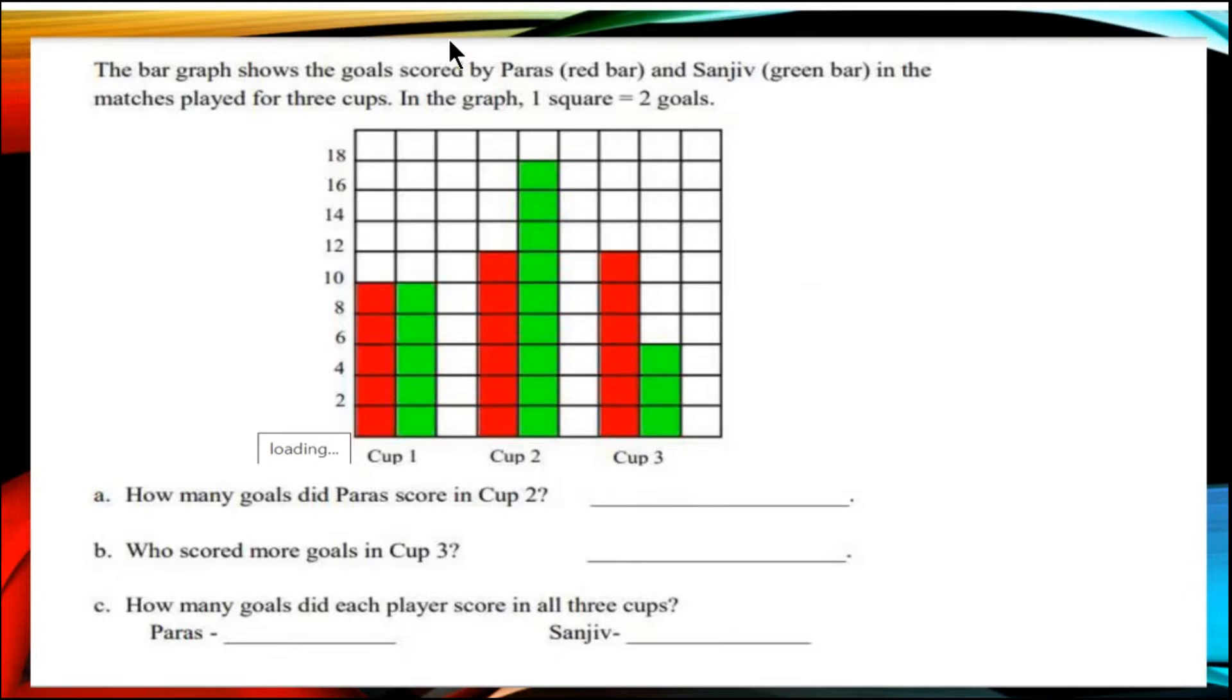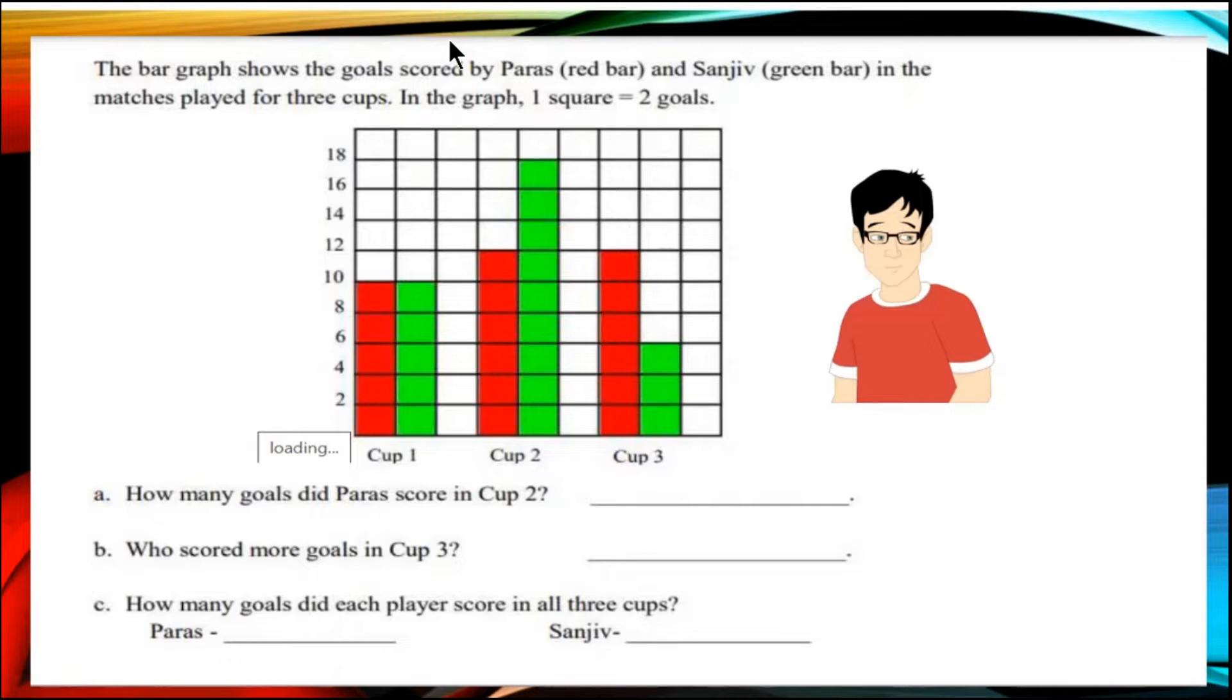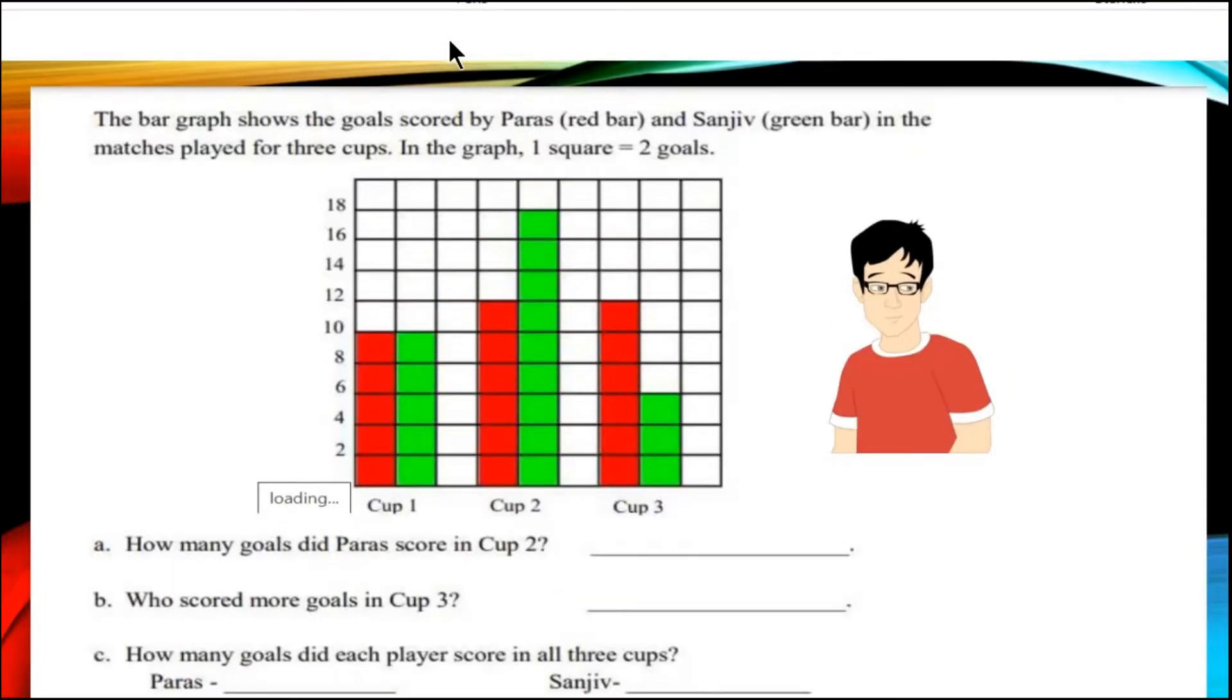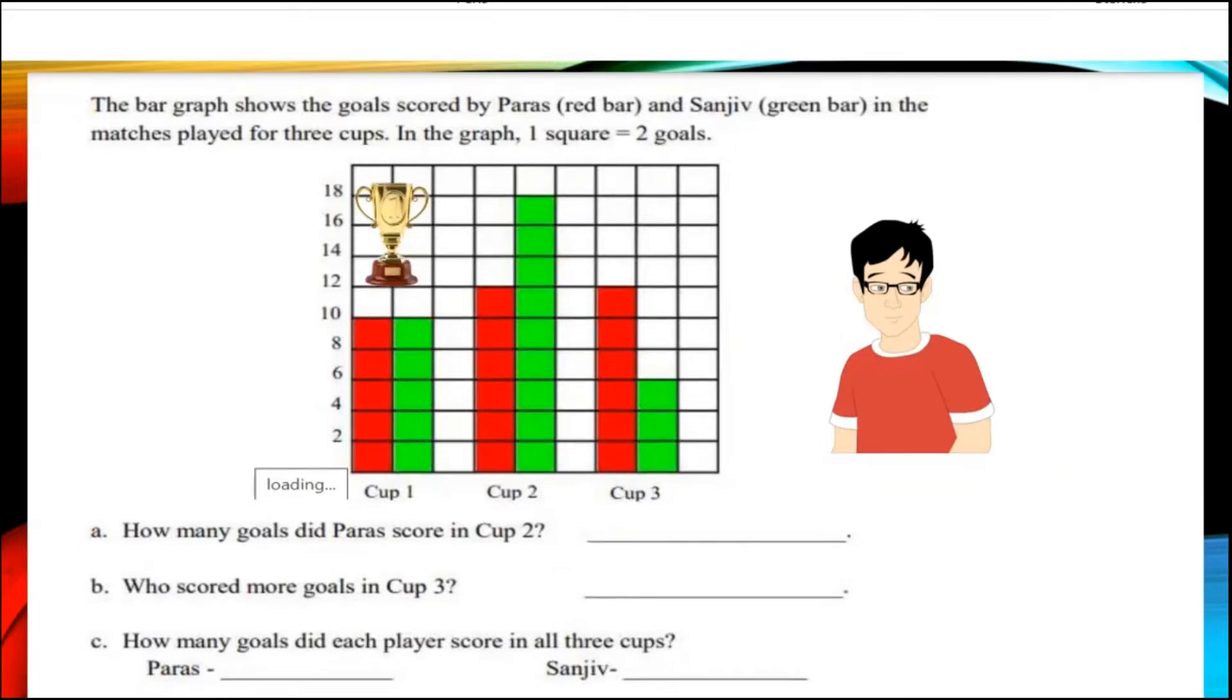Let us read the bar graph shows the goals scored by Paras. Suppose this red t-shirt wearer is Paras and the red bars belong to Paras. And Sanjeev, which is going to have green bars in the matches played for the 3 cups, winning cups. So the data shown in the picture is of winning cups.